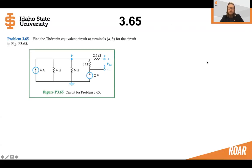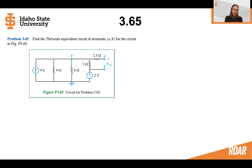Hello everybody. Now let's take a look at problem 3.65. This problem is one of the problems related to your homework 5. In this problem we are going to find the Thevenin equivalent of the circuit below, and this problem is going to cover two things: the first is how to find a Thevenin equivalent, and the second is how to use superposition as a method of simplifying circuit analysis.